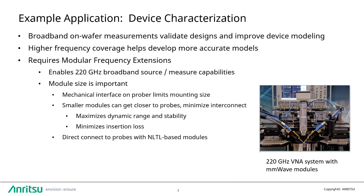To achieve 220 GHz broadband single-sweep capabilities like those available on the Anritsu VectorStar VNA, frequency multiplier modules are needed to extend the source and measure as close as possible to the DUT. At these frequencies, it is critical to minimize the insertion loss due to interconnect length to maximize dynamic range and measurement stability required for these applications.